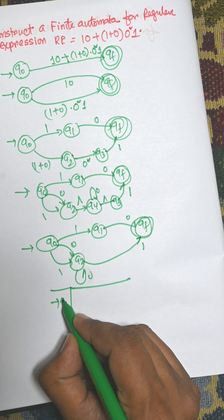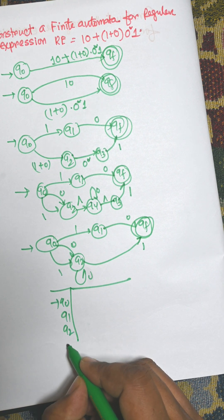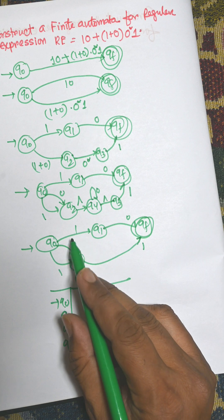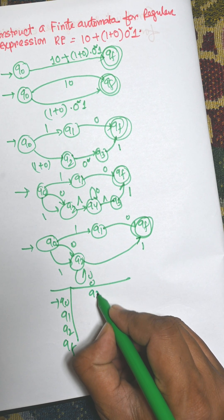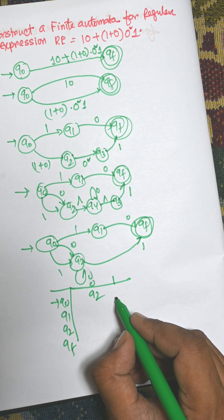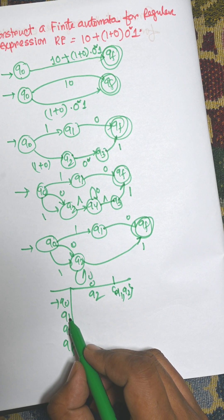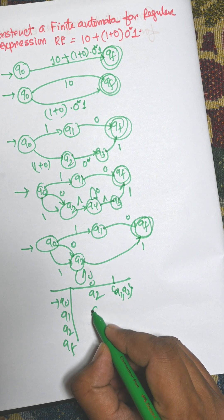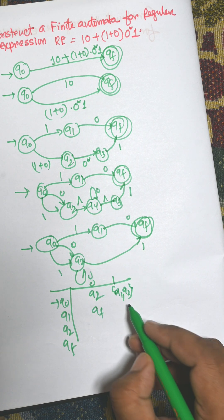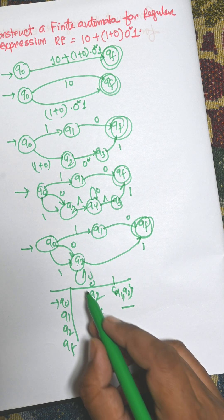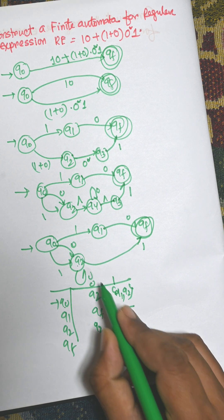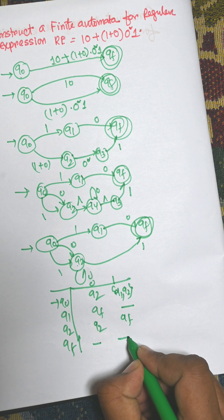So this table: that is q0, q1, q2, and qf. From q0 to 0 this is q2. From q0 to 1 there is q2 and q1 q2. So this is NFA. For q1 to 0 this is qf. For q1 to 1 there is no state. From q2 to 0 q2, from q2 to 1 qf, and from qf there is no state.